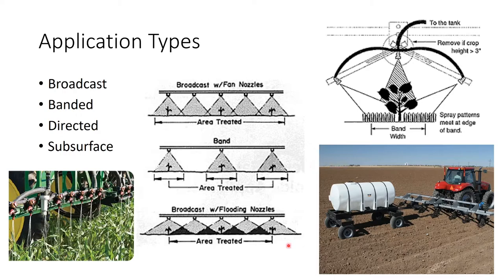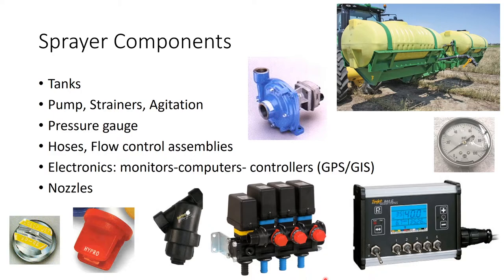There are a lot of different components when we look at spray equipment in general. The components typically include some type of tank to hold liquid, different types of pumps, straining, agitation to keep things mixed and move fluid around. We'll see pressure gauges, flow control devices, and hoses all over the place, and more nowadays we'll see a lot of electronics being incorporated including GPS control and monitoring solutions. And then most importantly, nozzles are one of the things we're going to focus quite a bit on in this discussion.